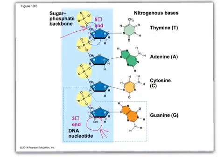Student asks: does the 3' OH just signify that that's where the 3' end is? Yes — all the other positions are linked. Having that free OH group is important — it marks an open space for another nucleotide. Everywhere else, there's not a free 3' OH; instead, it's occupied by a phosphate group. That structure is important for the function of replication.